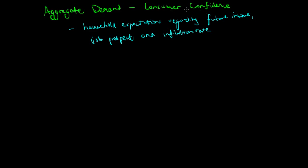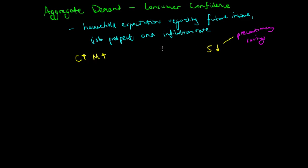If consumers are more confident, they are going to increase their consumption expenditure, import more goods and services, and therefore save less. When consumer confidence is high, people are less likely to save due to precautionary concerns, so precautionary savings will go down. People confident about their future incomes and job security will spend more now and save less.